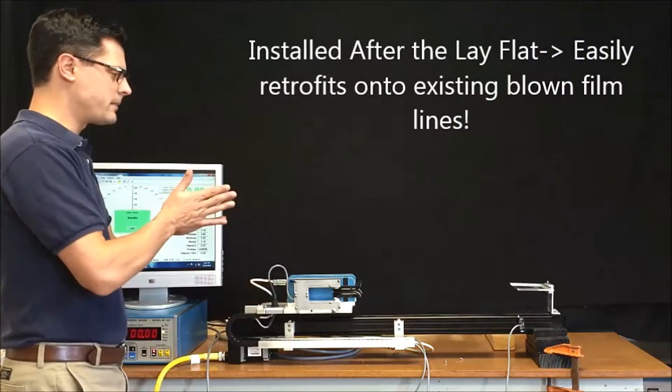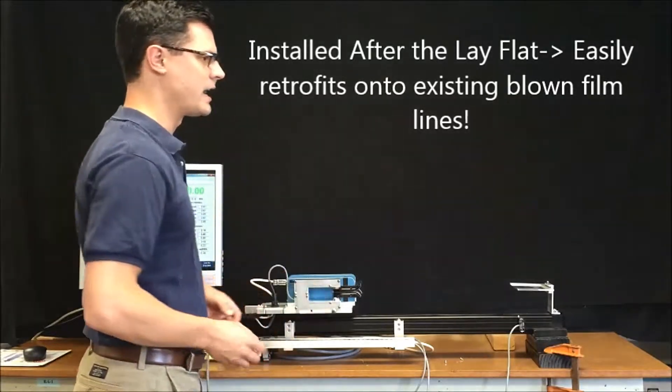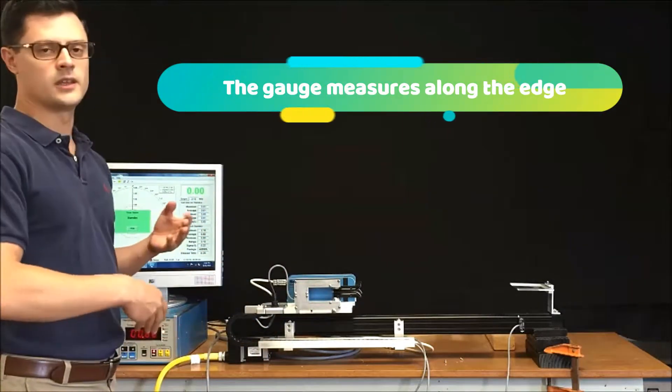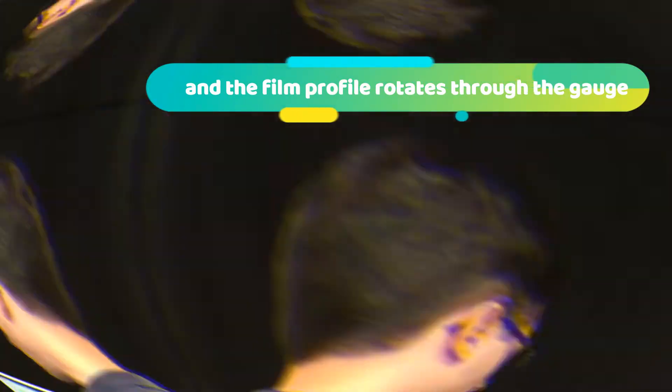Once the bubble's collapsed, we like to measure one spot along the edge and we use that spot to get a polar plot if the die is oscillating or if you have an oscillating rollout.